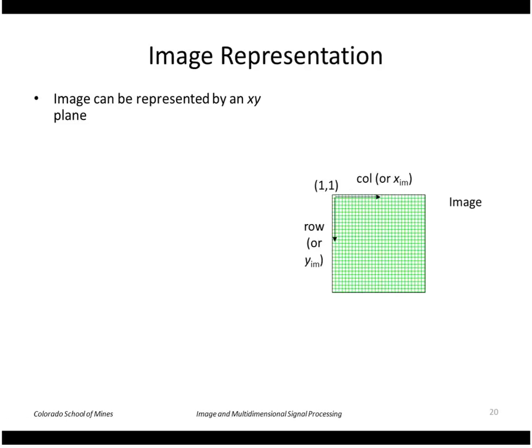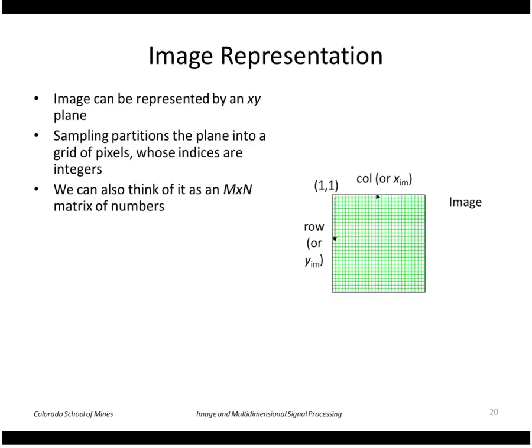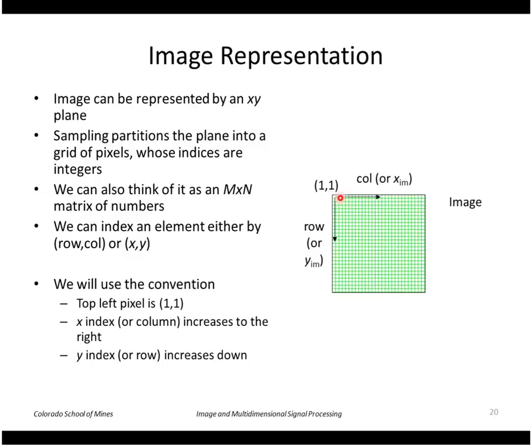So our convention is that we have an image that's put into a buffer like this, a two-dimensional array. It's going to be considered to be pixels, and the indices of those pixels are integers. So this is really a matrix of numbers, m by n. So we can index an element by either the row column, so in this case it would be row this way, column this way, or xy. So our convention is that we start at 1,1, that's what MATLAB does. The x or column increases to the right, and the y or row increases down.